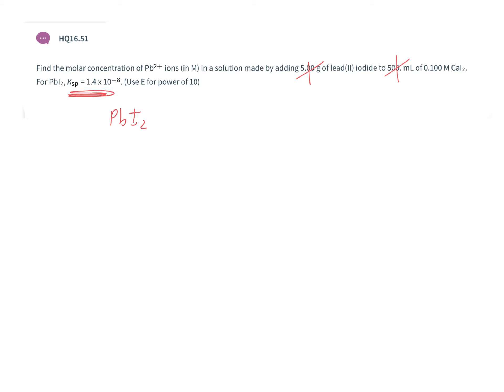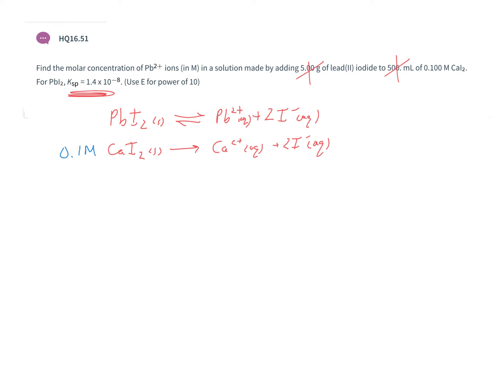What we need to think about is what's actually taking place. We have the equilibrium where lead two iodide ionizes to give lead 2+ and two iodide ions — that's the weak electrolyte at equilibrium. At the same time, we have the strong electrolyte calcium iodide, which ionizes completely to give calcium 2+ and two iodide ions per formula unit. We have a 0.1 molar solution of calcium iodide.